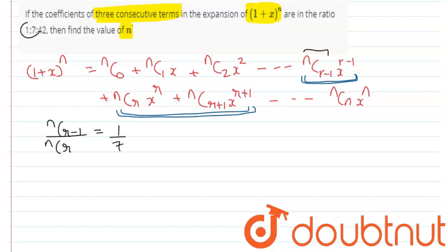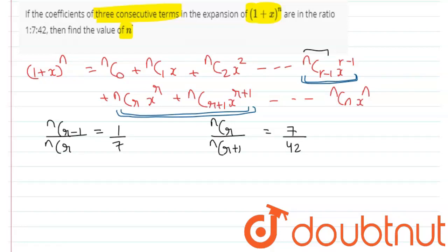Taking the first two terms of the ratio. Also, we have nCr divided by nC(r+1) equals 7/42, taking the last two terms of the ratio, which is nothing but 1/6.